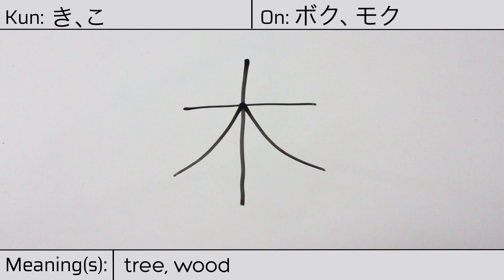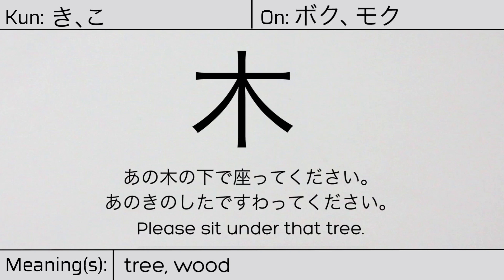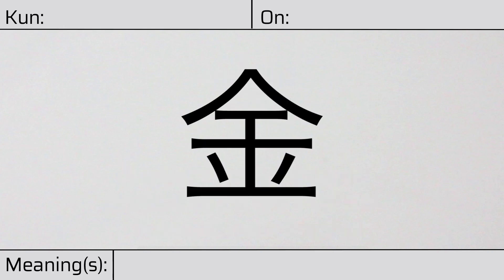You can remember this kanji by thinking of it as looking like a tree. Our example sentence is: あの木の下で座ってください — Please sit under that tree.